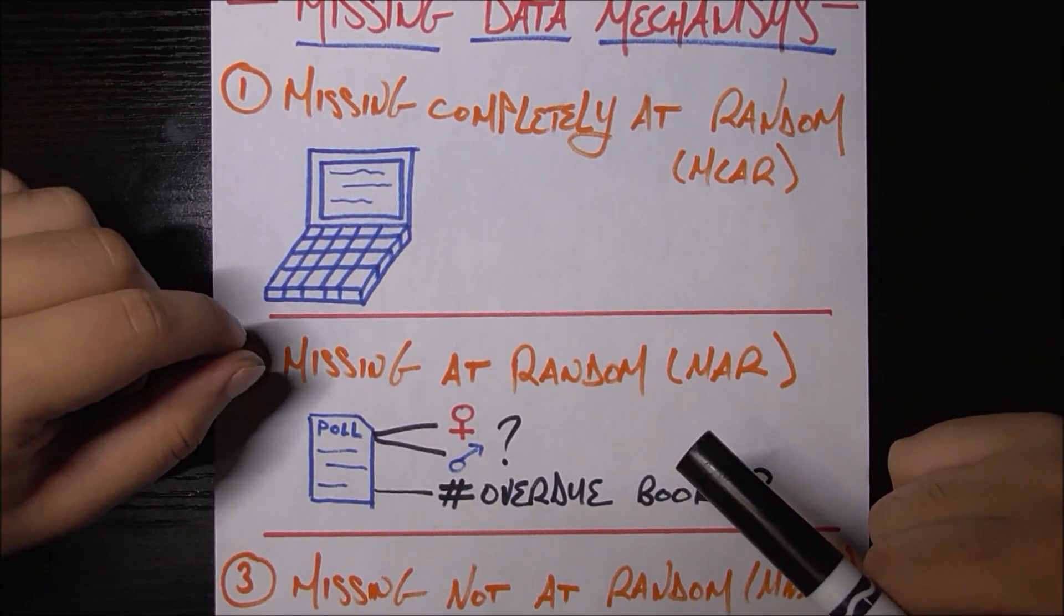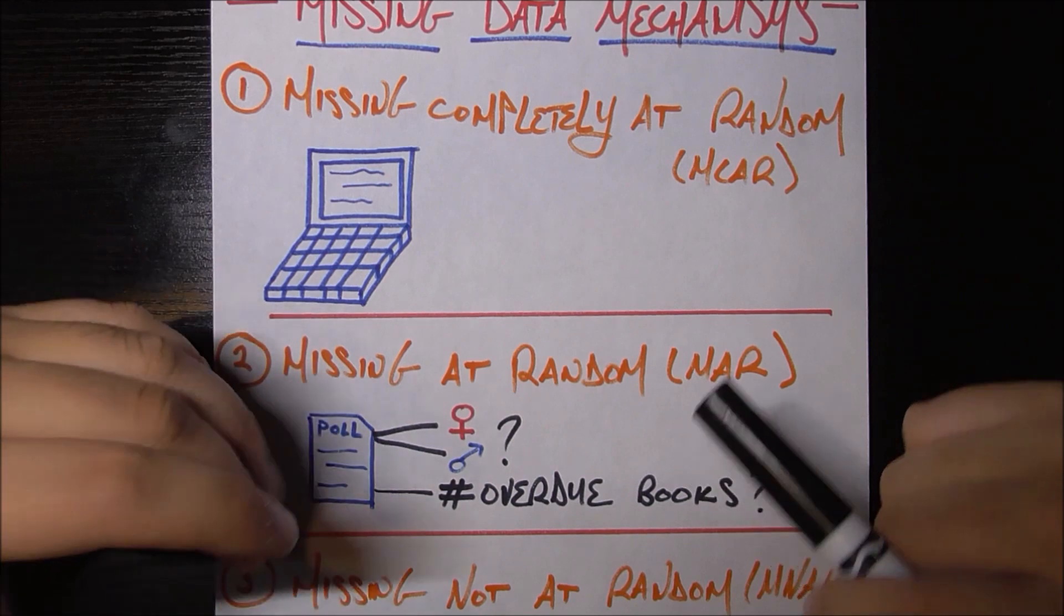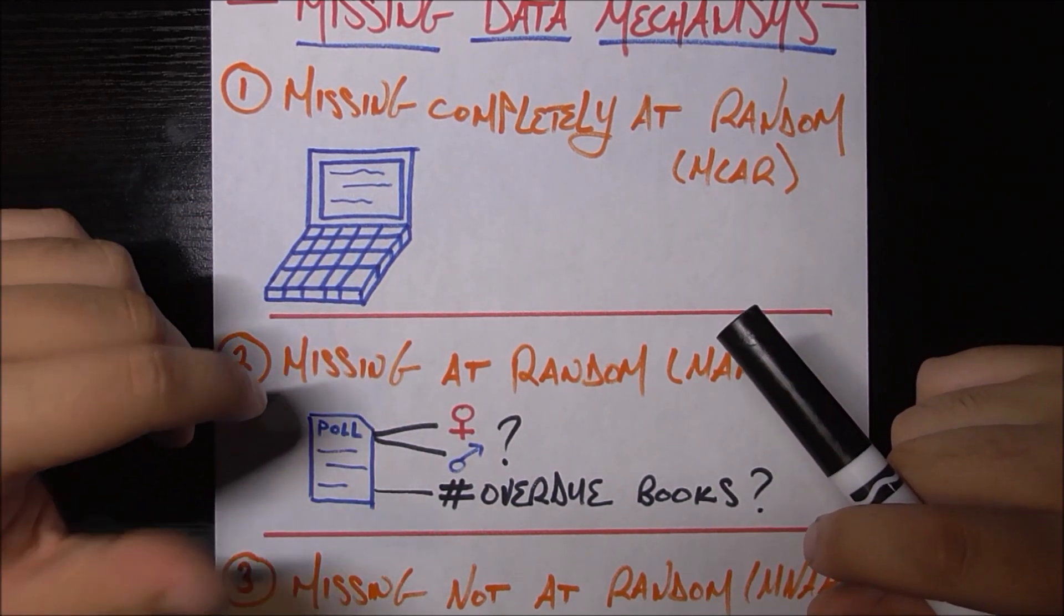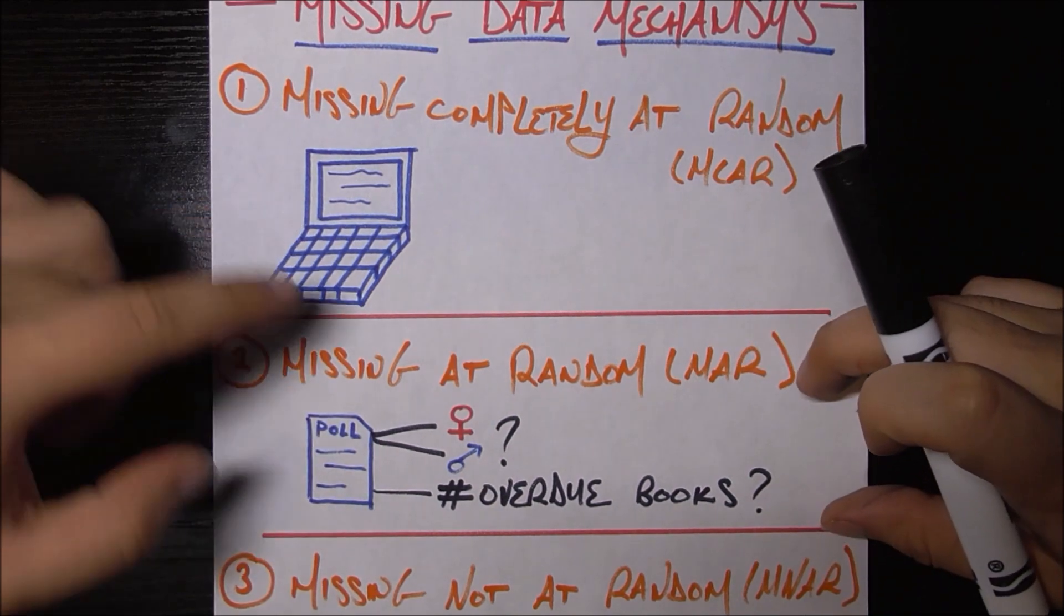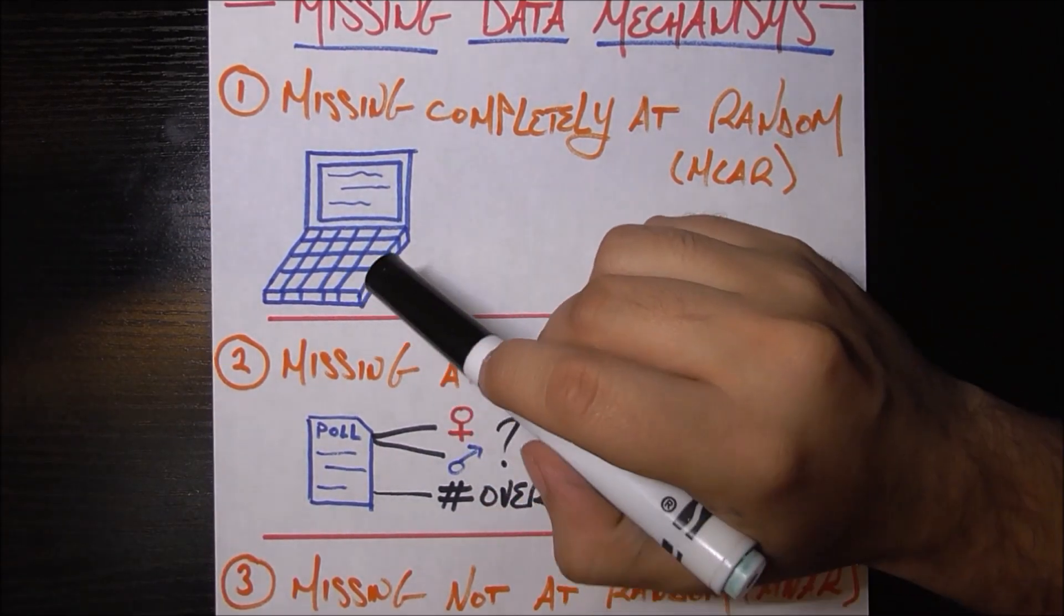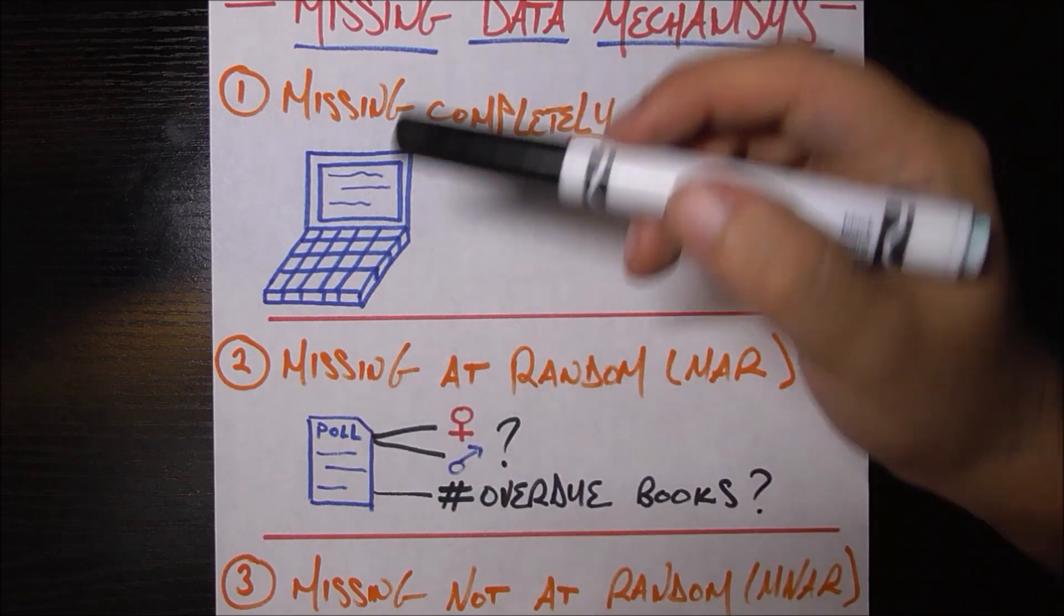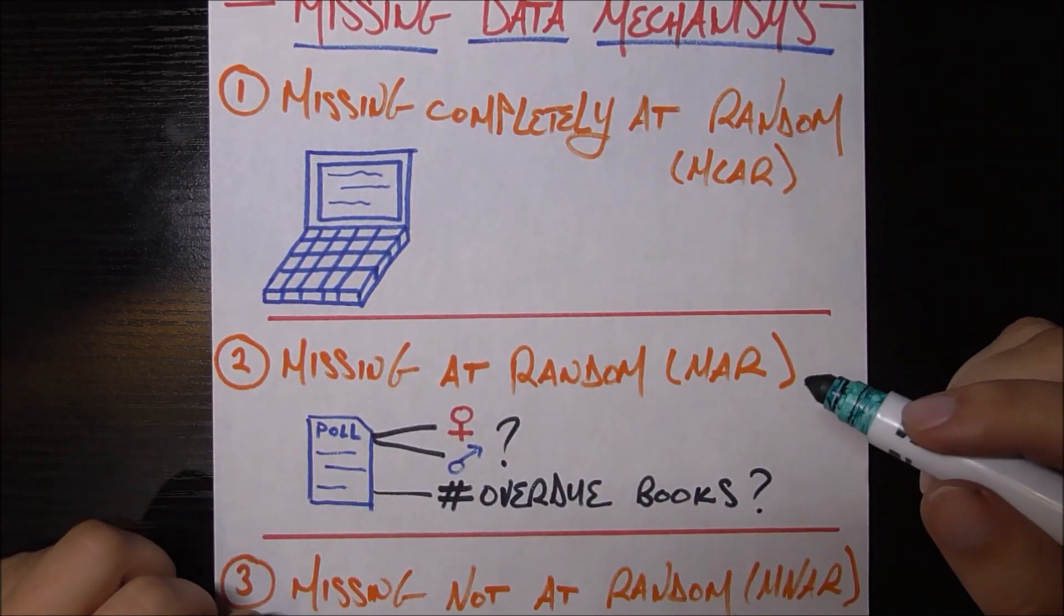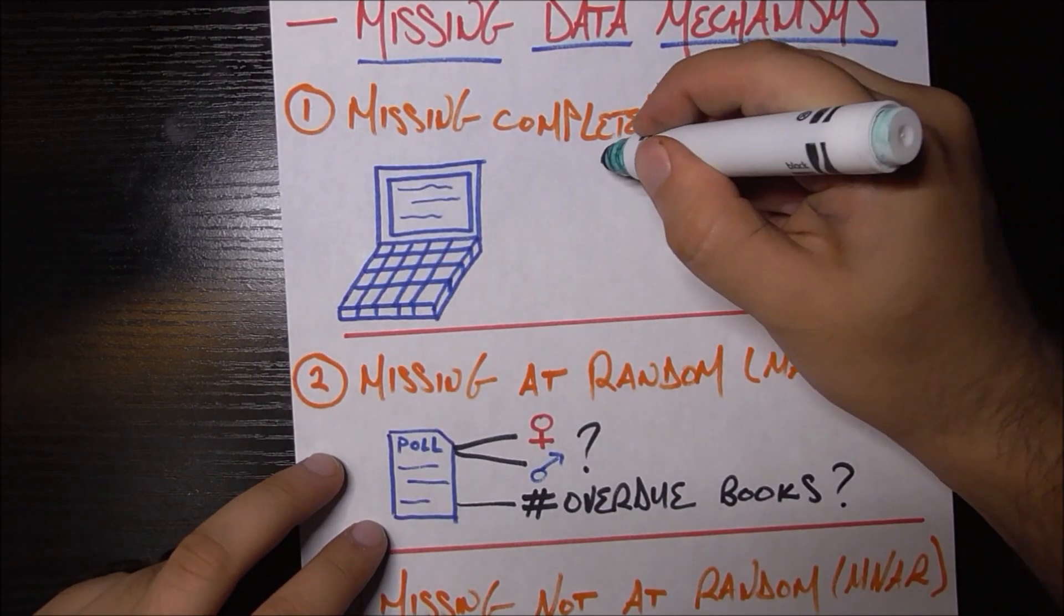So pretend in your town, you're trying to do a study of, on average, how many overdue library books does each citizen have? So in this first case, let's say you go to the library and they give you access to their internal computers. And they say, go ahead, you can just use our computers.